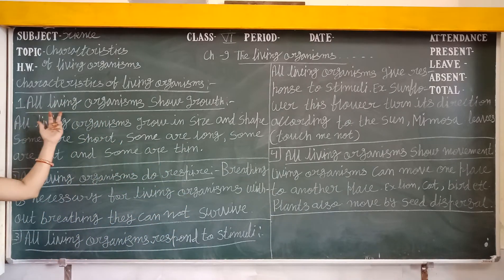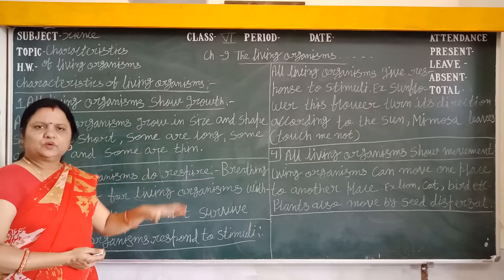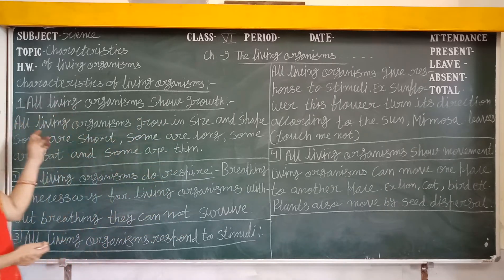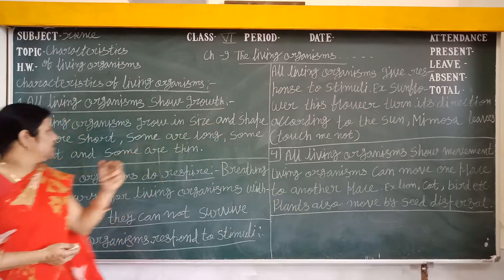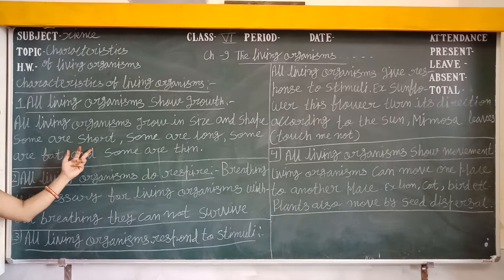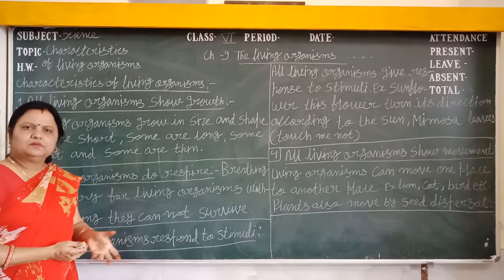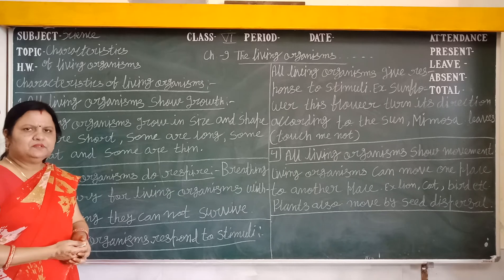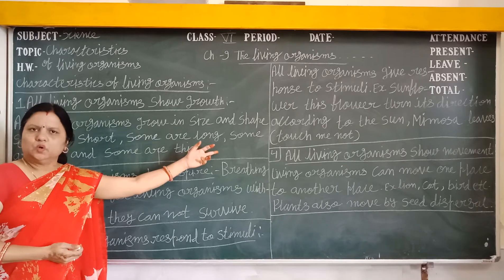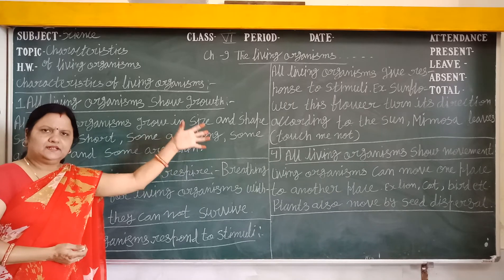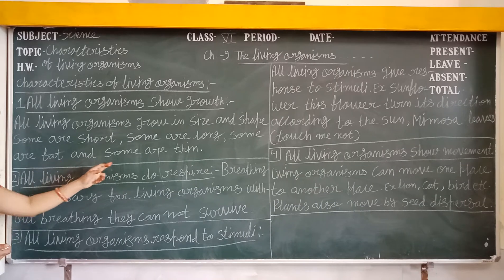First, all organisms show growth. They grow in size and shape. All living organisms grow in size and shape. We can see in plants — some are short, like herbs, some are shrubs, and some are trees. They differ in their size; some are short, some are tall. Trees can be of long height. Some are fat and some are thin.